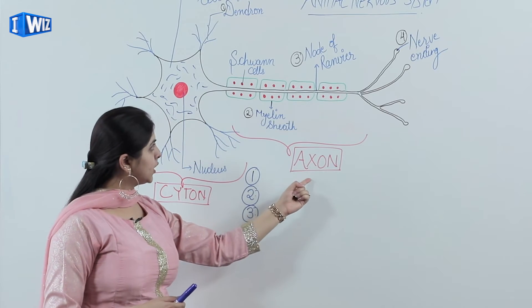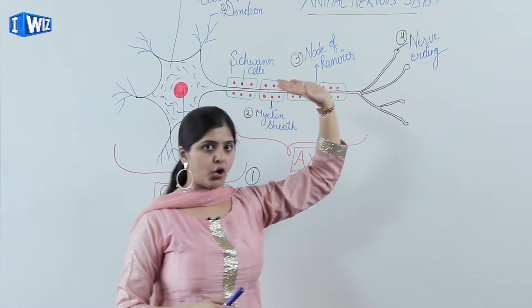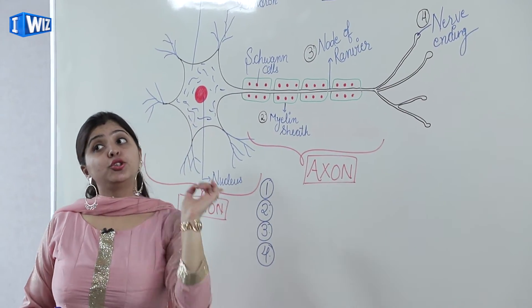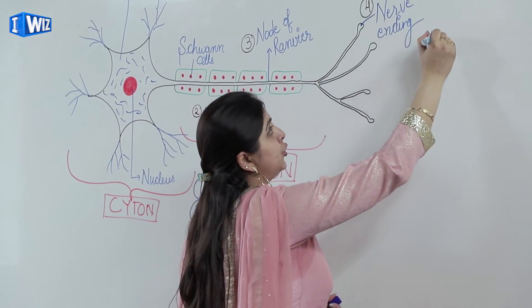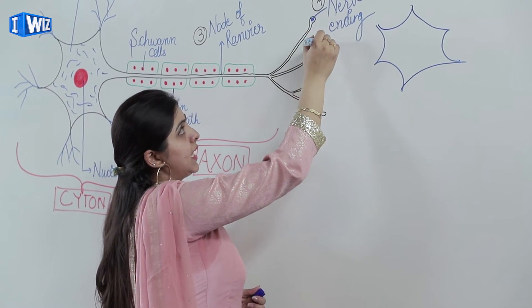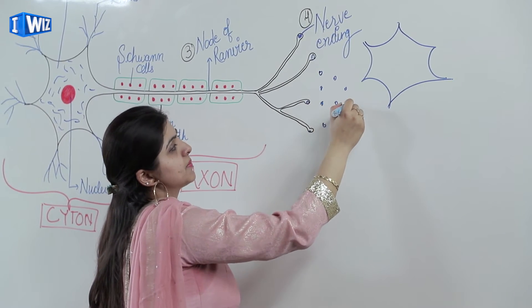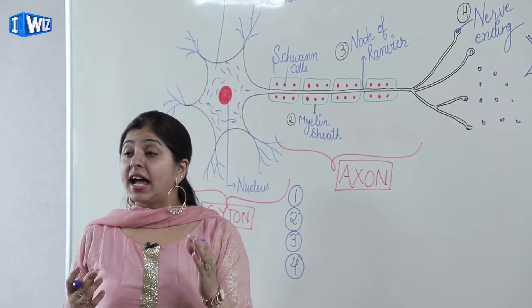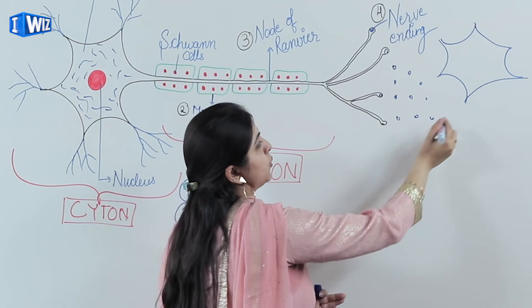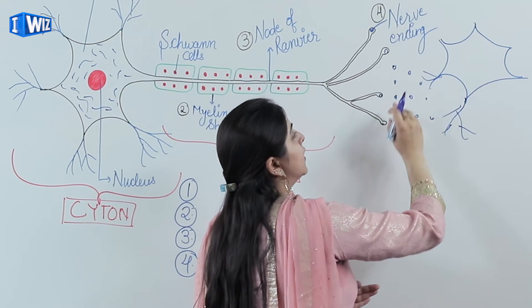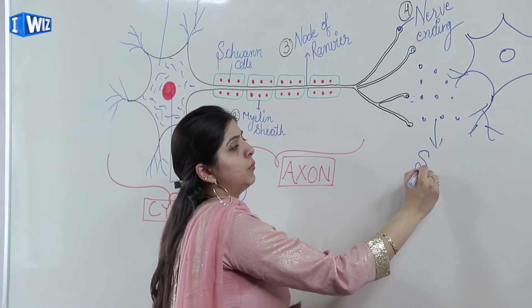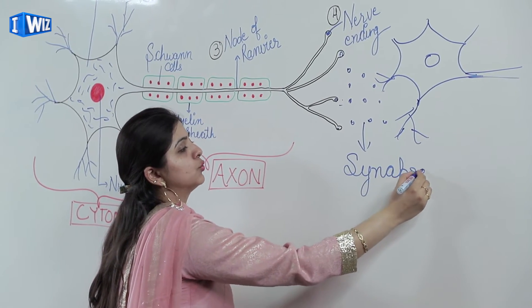At the nerve ending, the electrical signal is again converted to a chemical signal via neurotransmitters. These neurotransmitters are secreted out, and the dendron of the next neuron picks them up and transfers them to the next cell body. The gap between one neuron and the next is called the synapse. One after one, neurons are connected to each other through synapses.